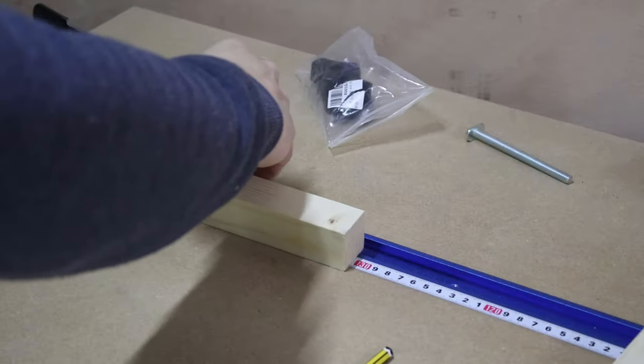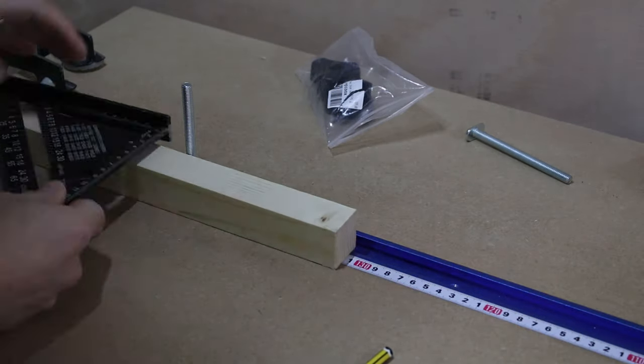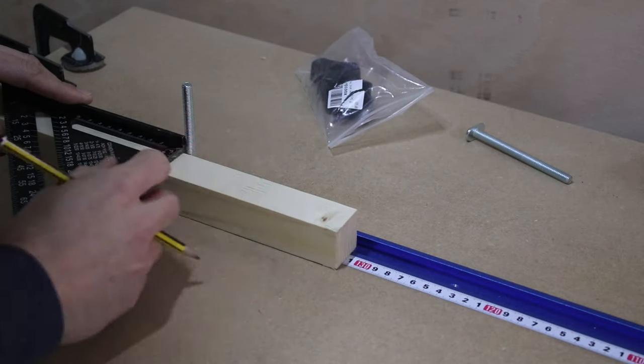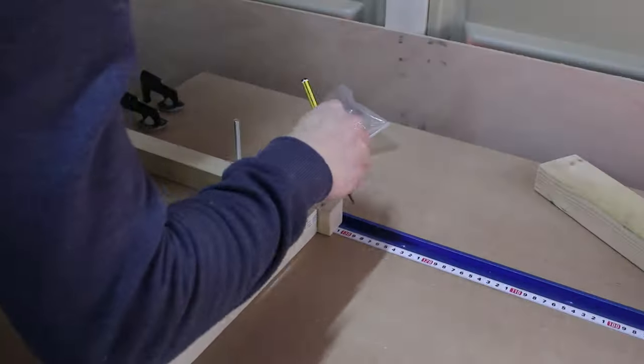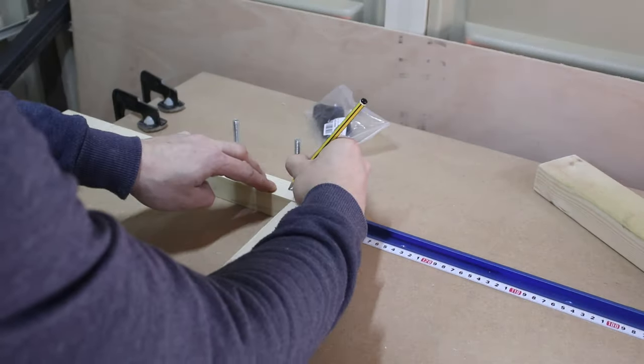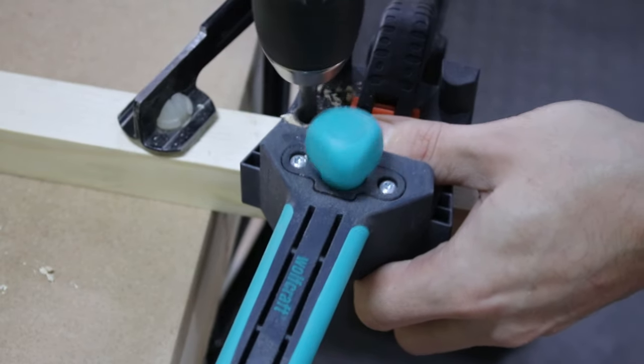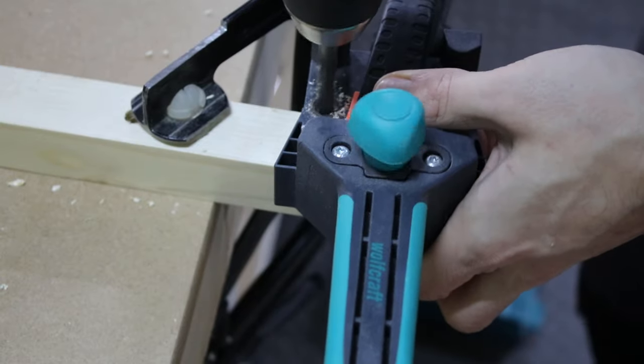With that done, I started to make the stop block out of 1x1 pine timber. Since my T-track is shorter than the workbench, I made the stop block longer, so it can reach the end of the bench. I drilled 2 holes for the T-track nuts.